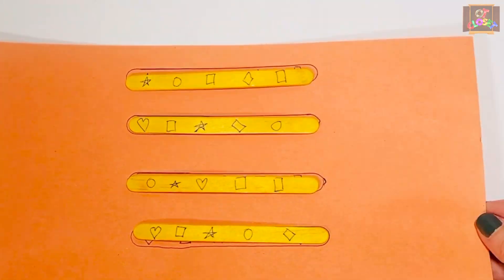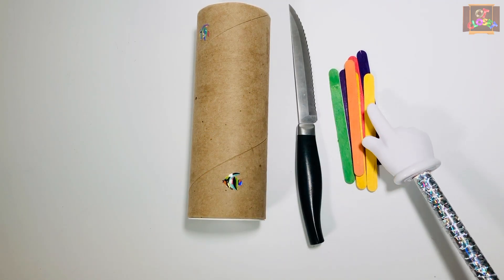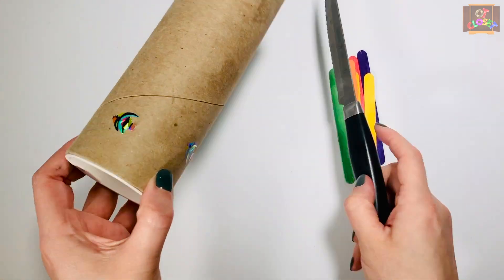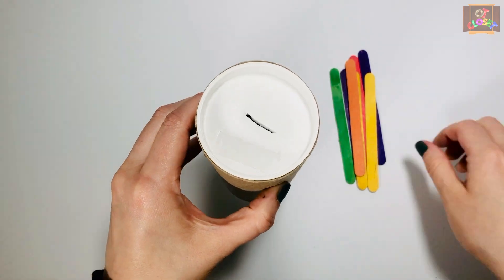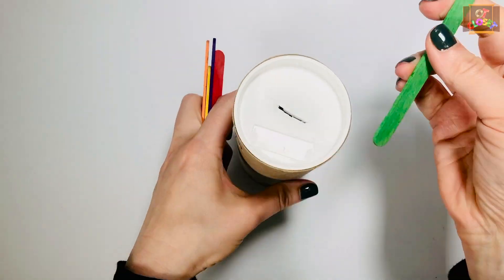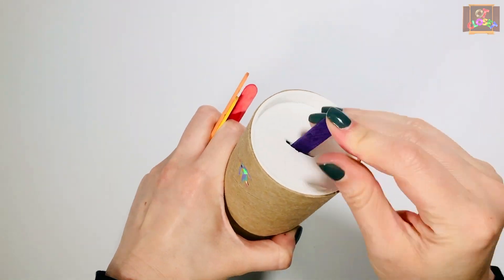Let's make a piggy bank for activity number five. You need an empty container, a knife, and popsicle sticks. Use the knife and make an opening. Now the kids can work on their strength as they push the sticks inside the tube. They can also count as they do that.